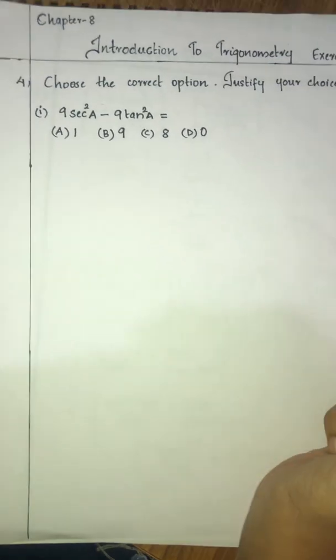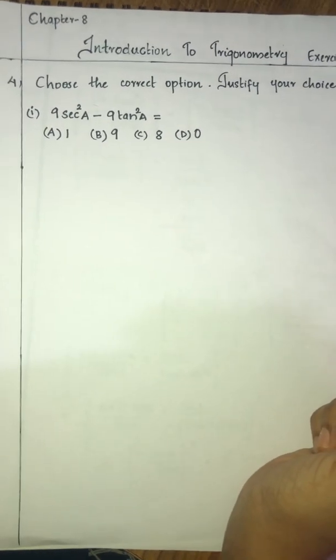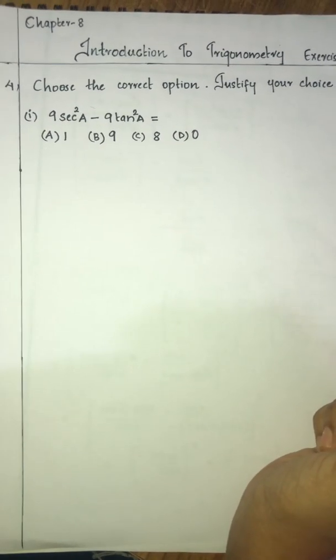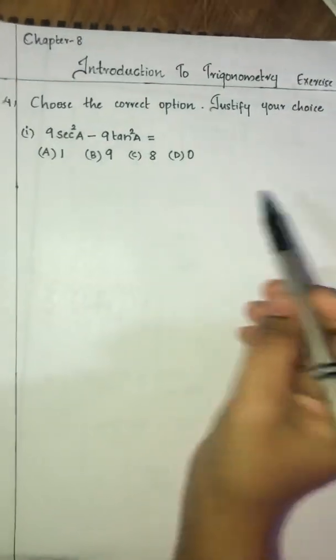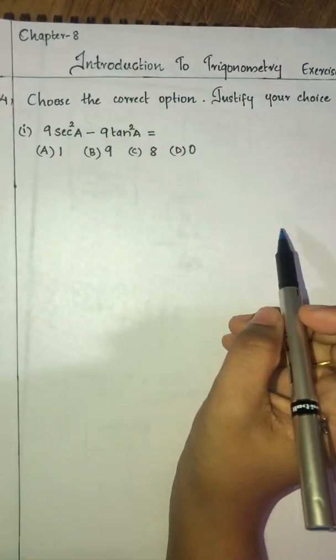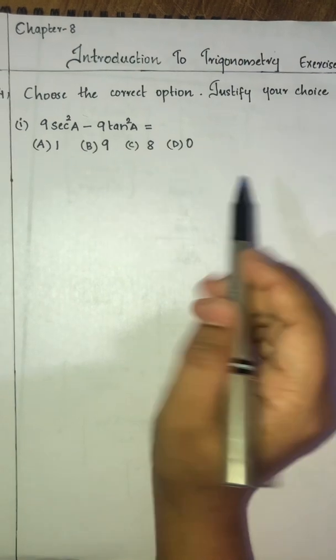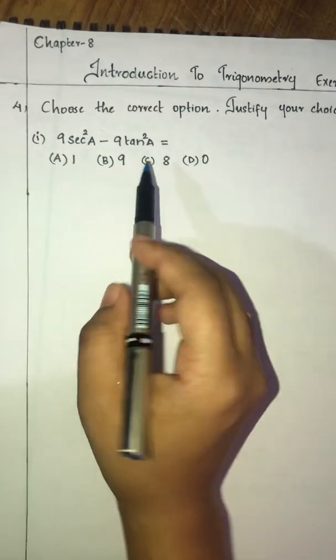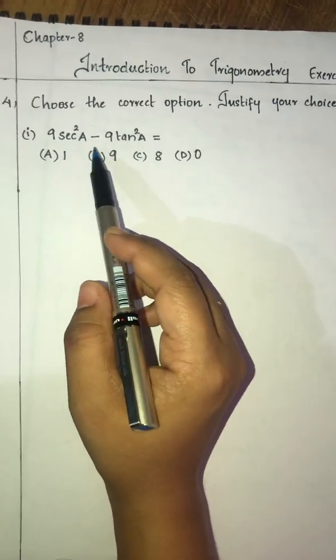Hi students, today we are going to discuss the fourth question from exercise 8.4. The question is: choose the correct option and justify your choice. And the first sub-question is,